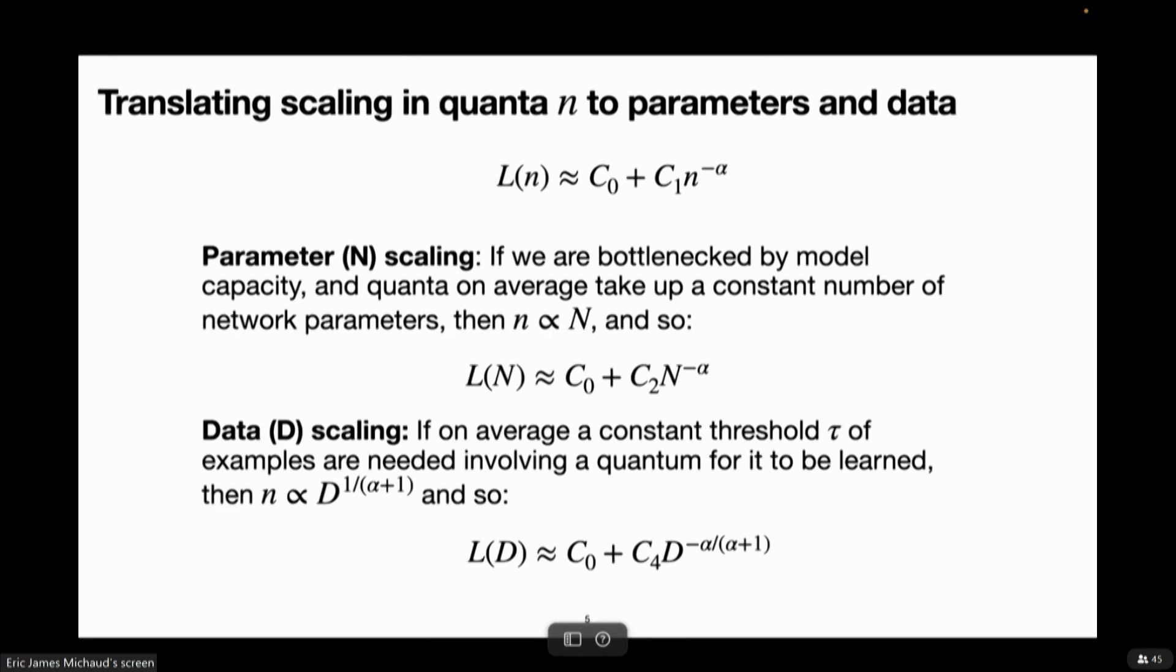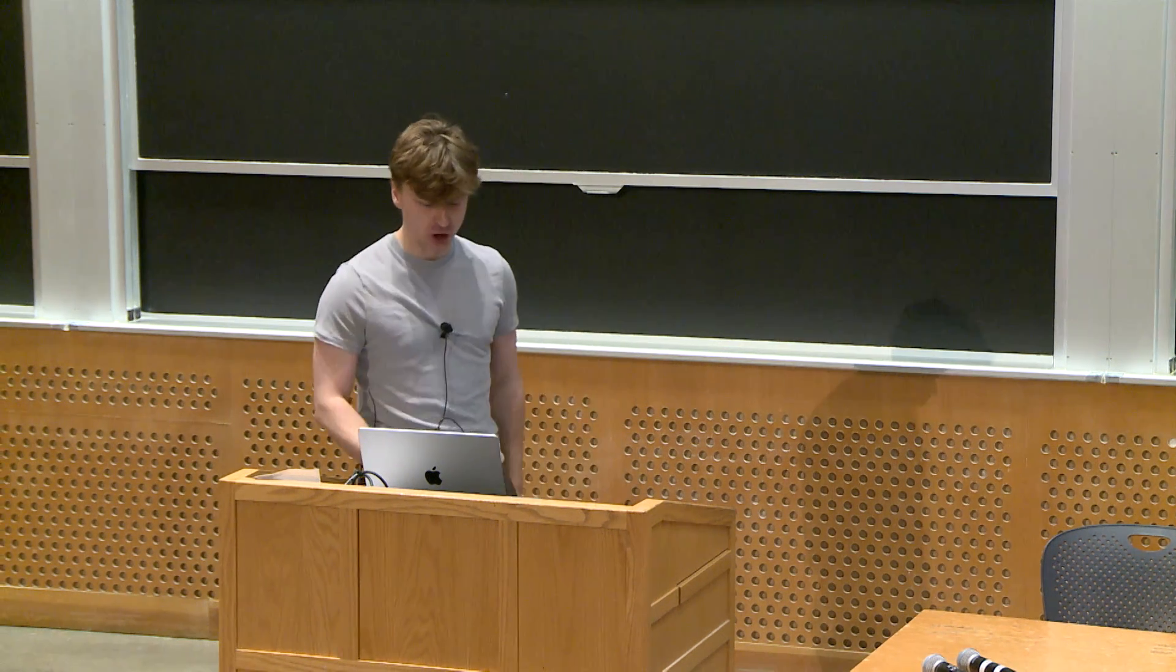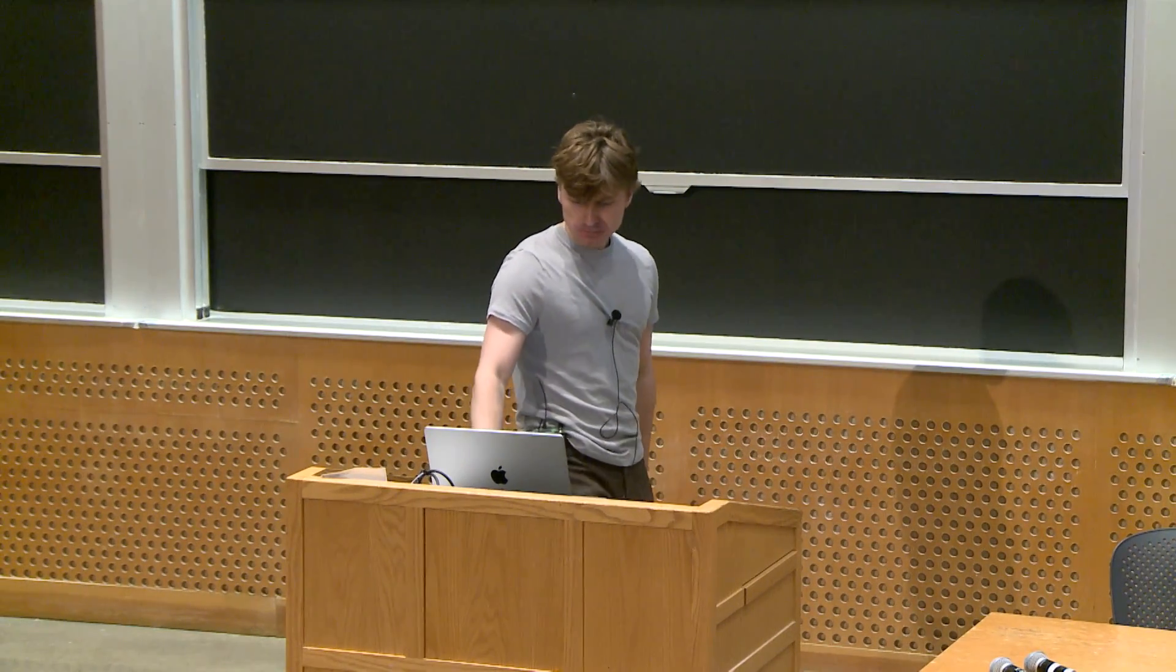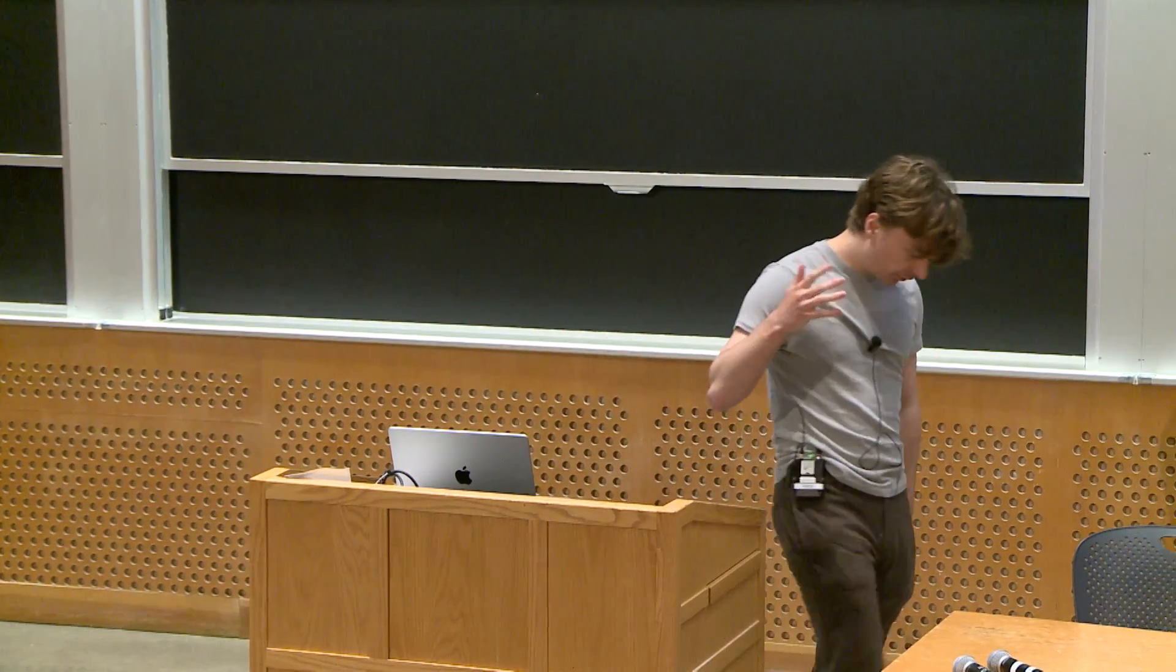And you can translate this into power laws in the number of network parameters, or the number of data points. For instance, if you just assume that on average, each one of these quanta requires some amount of network capacity, then for a network of a finite size, you can only learn so many, and the number of quanta you can learn, you can fit in your network is going to be proportional then to the size of the network. And so then you get a power law in parameters. And you can give similar arguments for data.